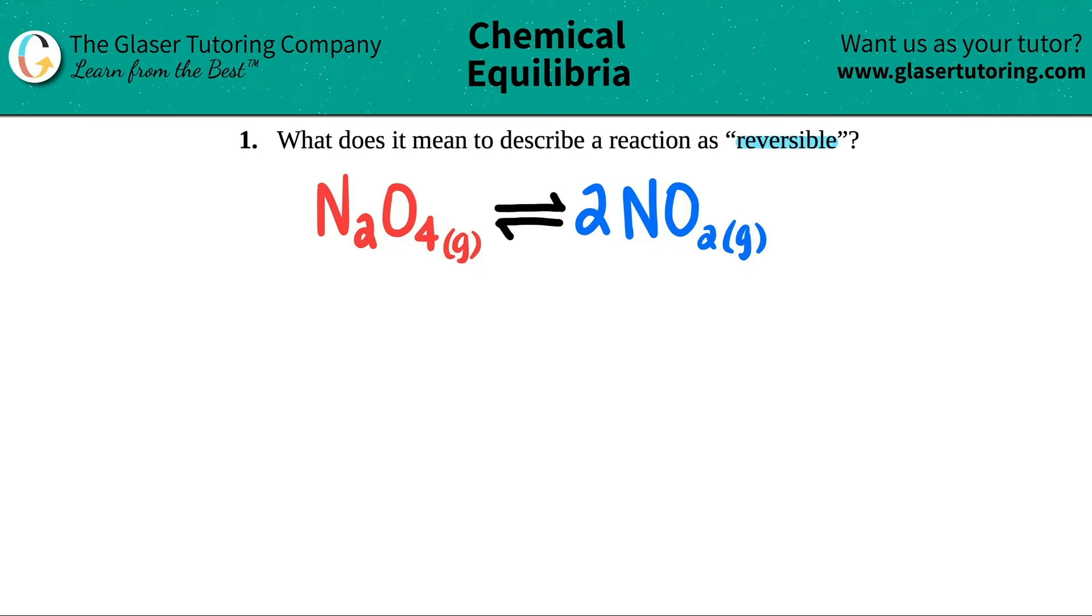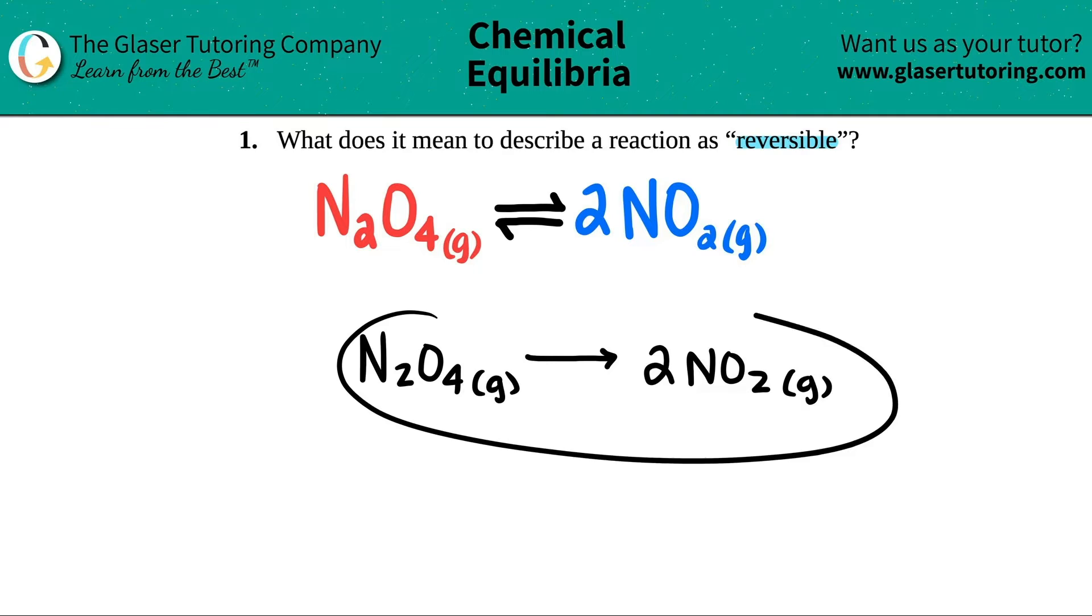If I wrote the same reaction N2O4 gas and then I just had a single arrow with 2NO2 gas, this would say that it is irreversible. Reversible - if I have the two arrows, that means that basically I have two reactions going on at the same time. In this case, I only have one flow. So in this irreversible reaction, N2O4 is getting produced into NO2. There is no way that the other reaction is happening.